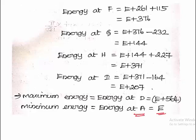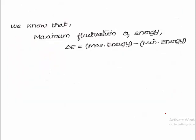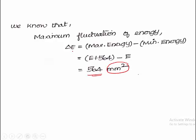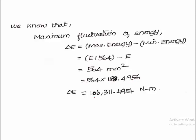The formula for maximum fluctuation of energy ΔE equals maximum energy minus minimum energy. So ΔE is 564 millimeter square. We require the value in Newton meter. From the scale conversion, 1 mm square equals 188.4956 Newton meter. So 564 mm square equals 106,311.4954 Newton meter.